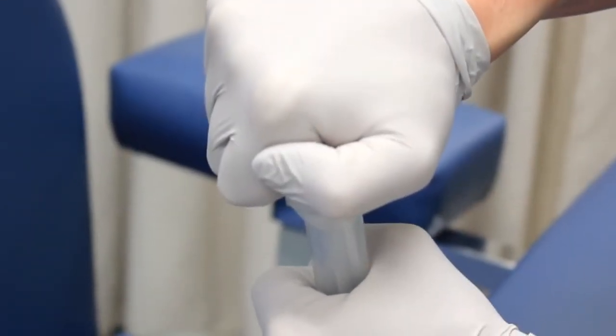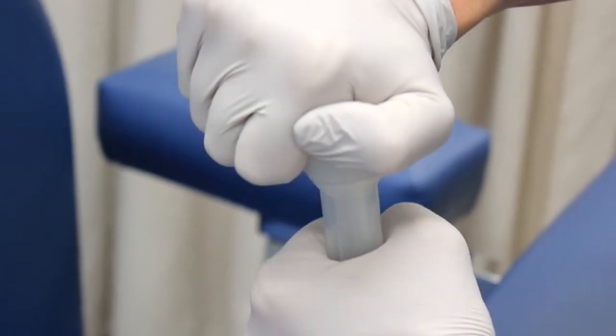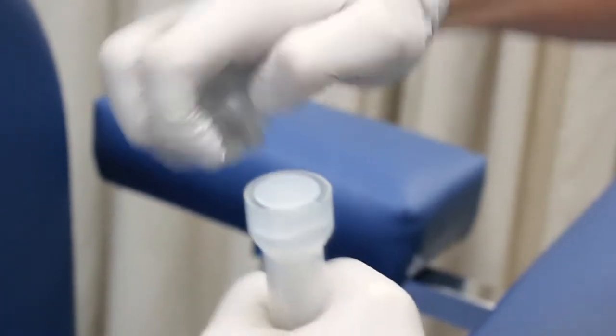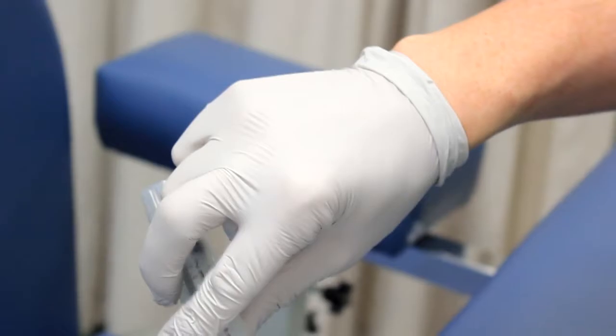To open the syringe, twist the top of the plastic container to snap the closure. Remove the top and pour the syringe into your hand, taking care not to touch the exposed end.